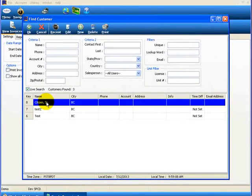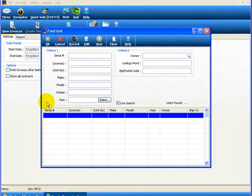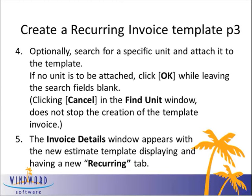We'll find a customer and attach it to the invoice. Now the Find Unit window appears. Optionally, we can search for a specific unit and attach it to the template. This could be an example of attaching a photocopier to a particular photocopier rental type template. However, if no unit is to be attached, click OK while leaving the fields blank. If you click Cancel, it does not stop the creation of the template invoice — it also continues on to the next tab, which is the Invoice Details window. The new estimate template will display and also have a new Recurring tab.